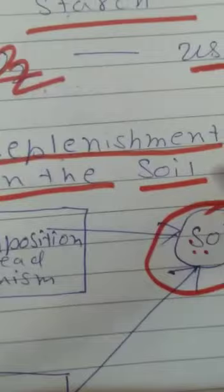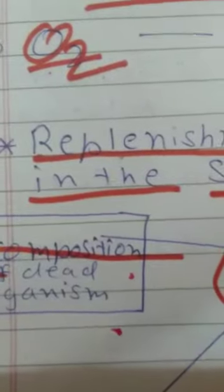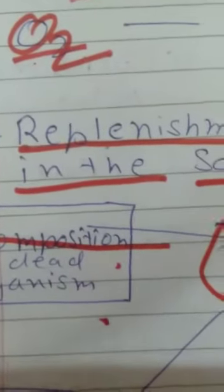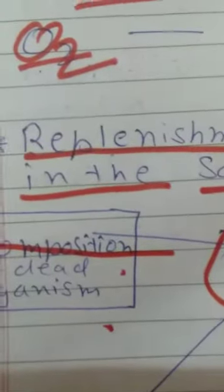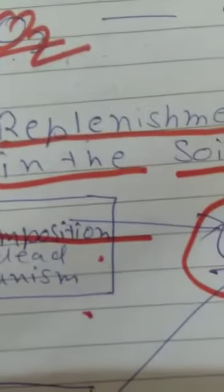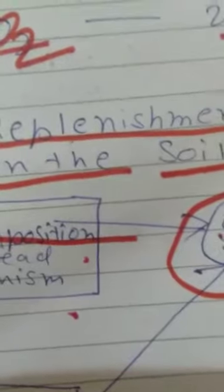How does the soil become nutritious for the development or growth of the plant? First, the decomposition of dead decaying organisms. Whatever organisms die, they are buried in the soil and the bacteria eat them and convert them into nutrients. This way soil gets nutrition. This is one of the ways.